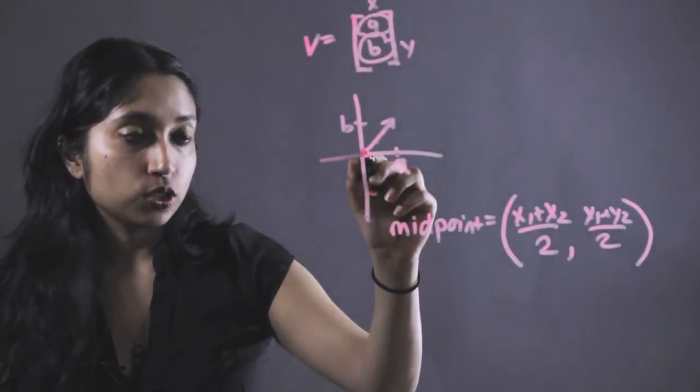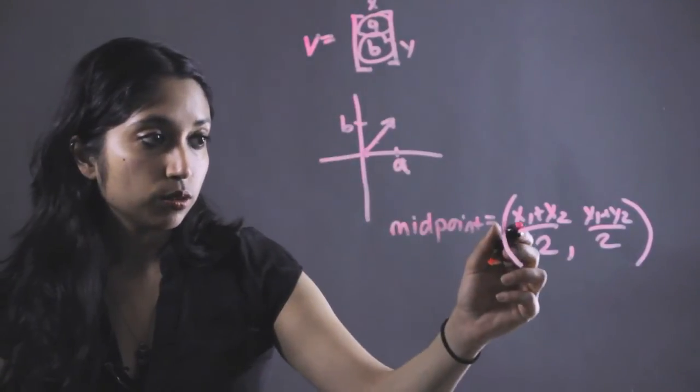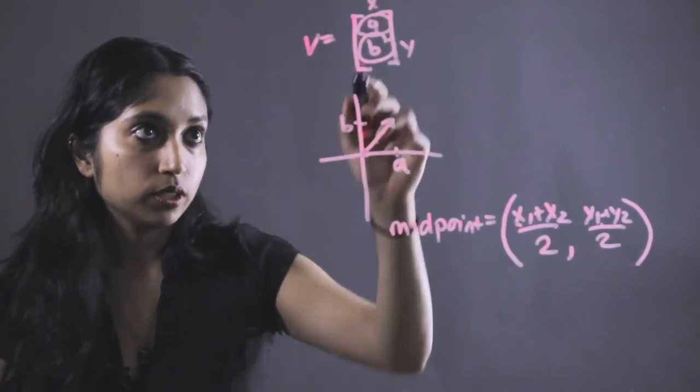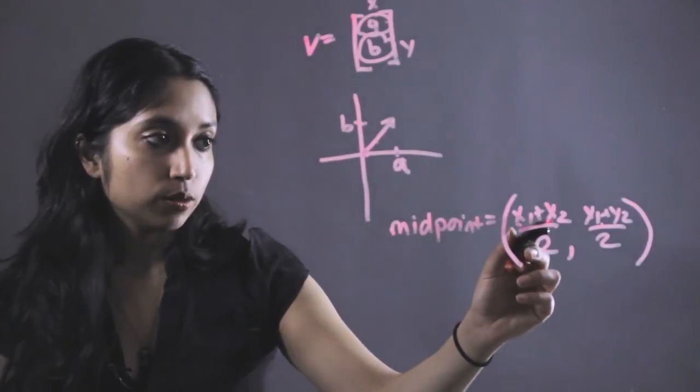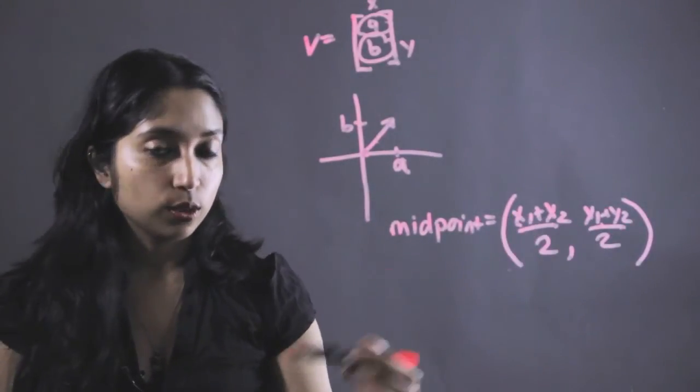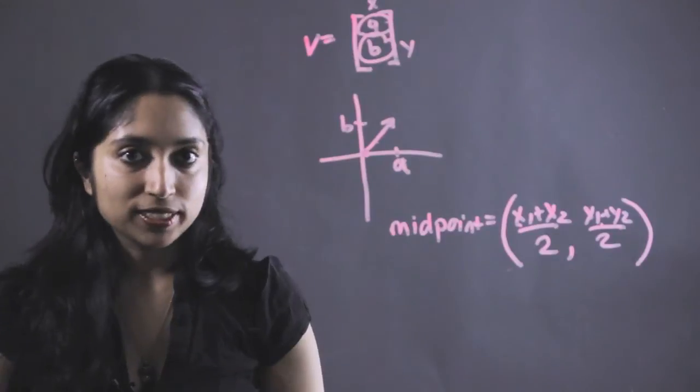So in this case, because it's starting at the origin, zero, zero would be X1 and Y1, and A and B would be X2 and Y2. And you would just plug them in, get your midpoint. It's simple as that.